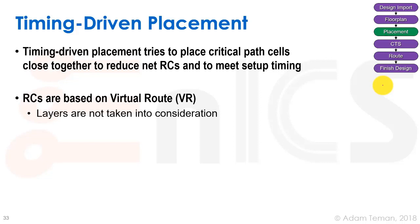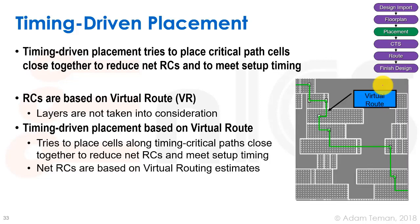What we do is we perform these things called virtual routes, where we connect routes between the different cell placements without actually going up through vias or changing layers. We just try to place the cells along the timing critical path close together to reduce the net RCs and meet setup timing. The net RCs are based on virtual route estimates.